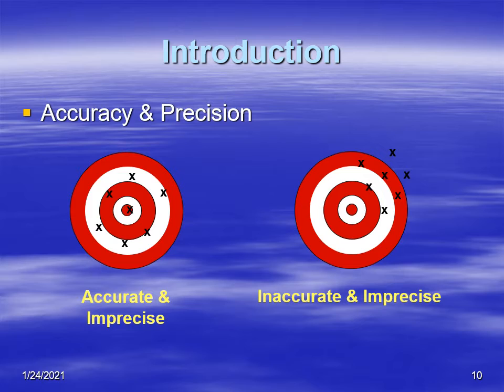Measurements that are accurate and imprecise would mean that on average they would fall near the center of the target. In the example of the target on the left, you can see that there is one in the center. All the others are about equal distance from the center, and when you average them it'll give you a value close to the center. But they're imprecise because the arrows don't fall close to each other. There's lots of scatter.